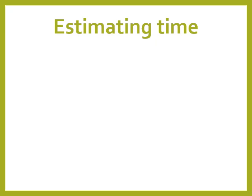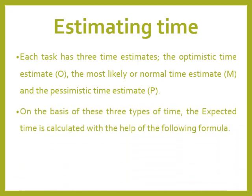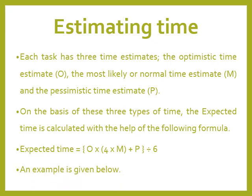In estimating time, each task has three time estimates: the optimistic time estimate, the most likely (normal) time estimate, and the pessimistic time estimate. On the basis of these three types of time, the expected time is calculated using a specific formula.